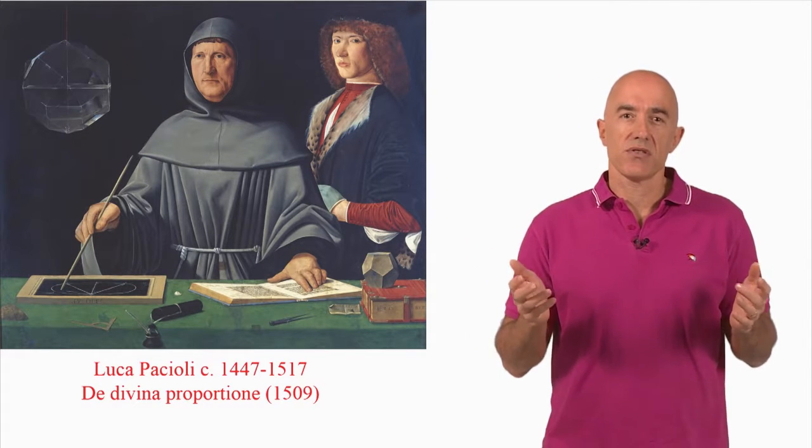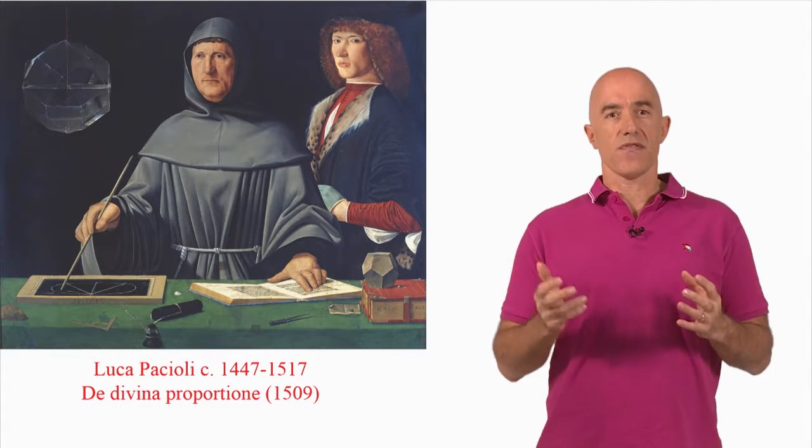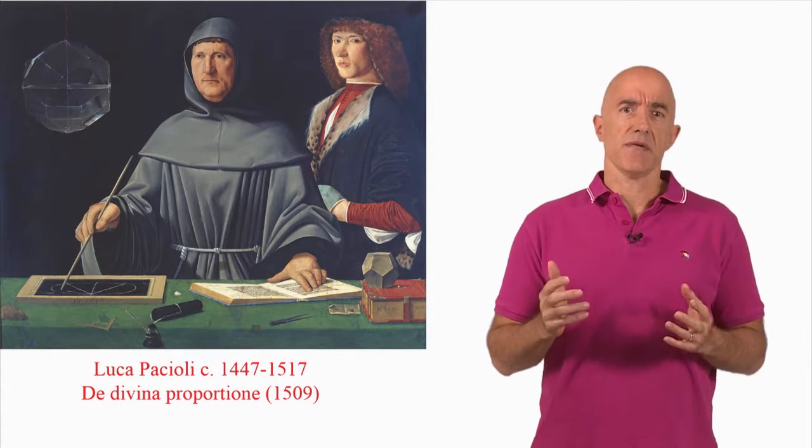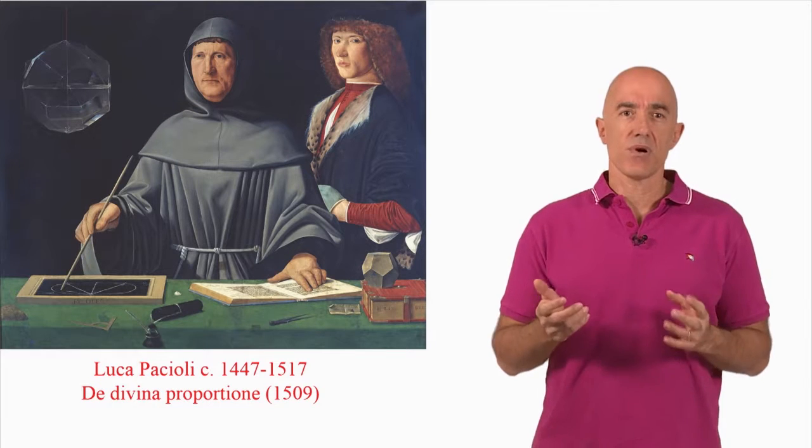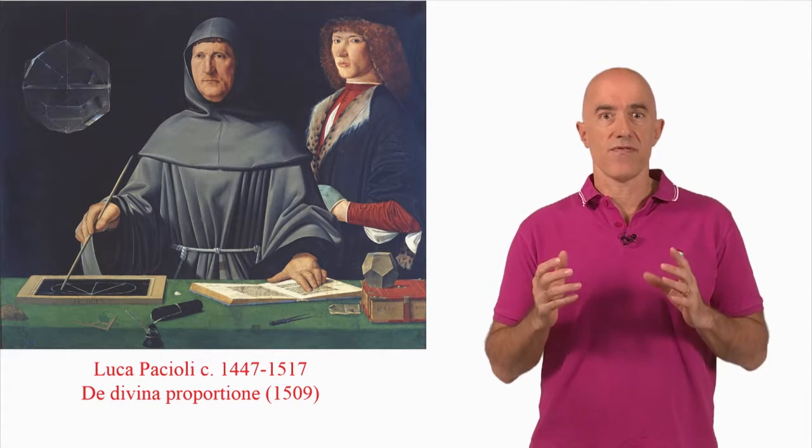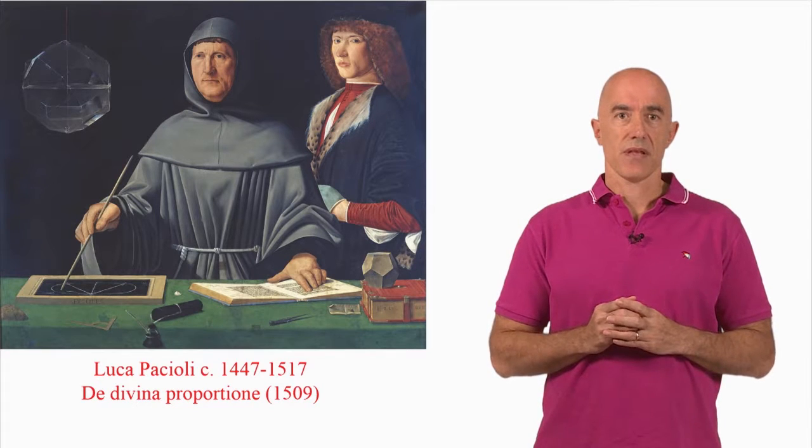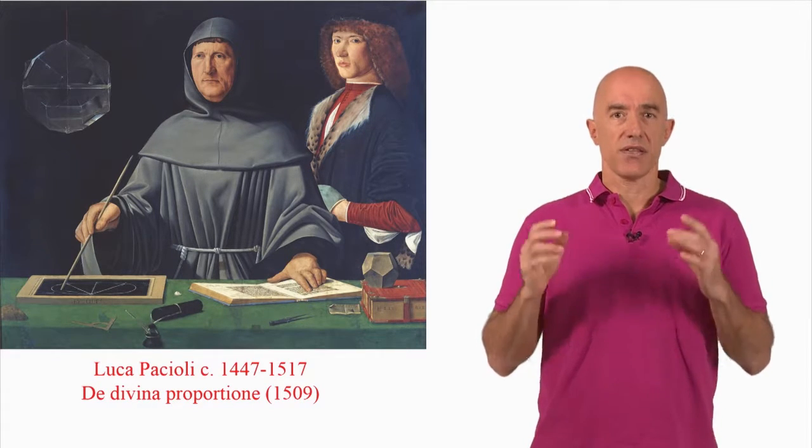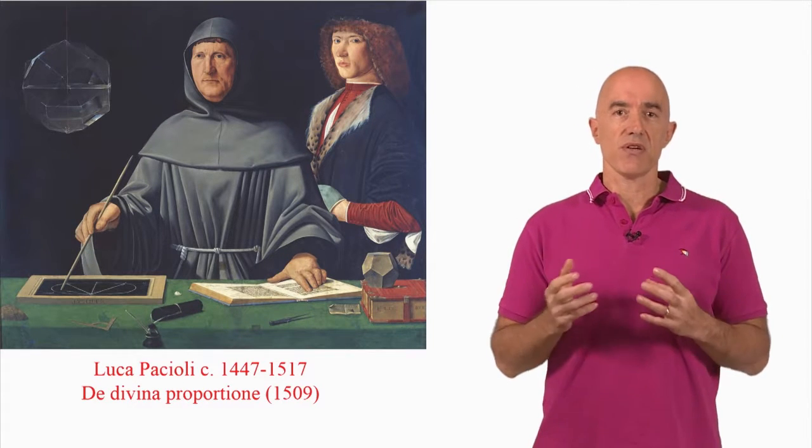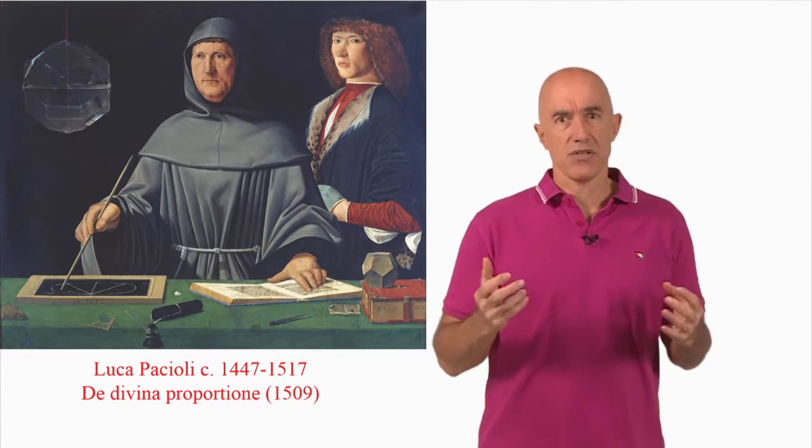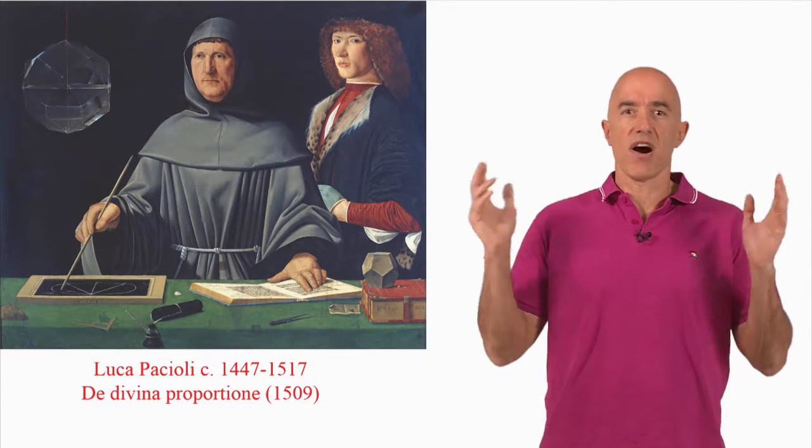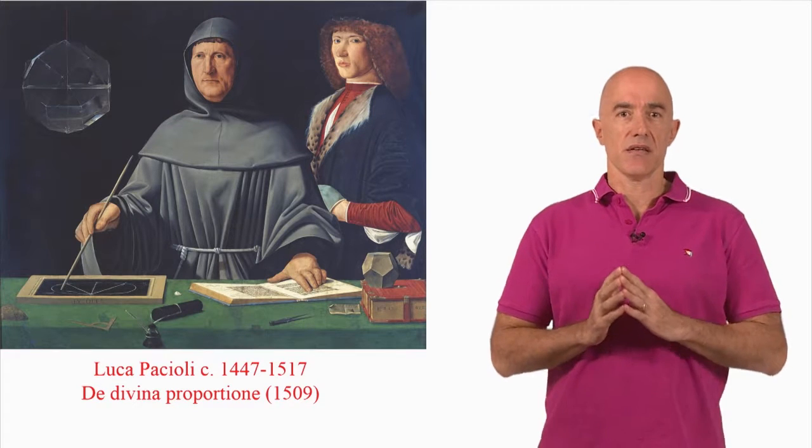Luca Pacioli is now known as the father of accounting and bookkeeping, but our interest in him is because he was the author of a book called the Divina Proportioni, or On the Divine Proportion. The divine proportion is a number. It's a number that we now call the golden ratio, and Luca Pacioli obviously thought this number was divine, was a godly number.